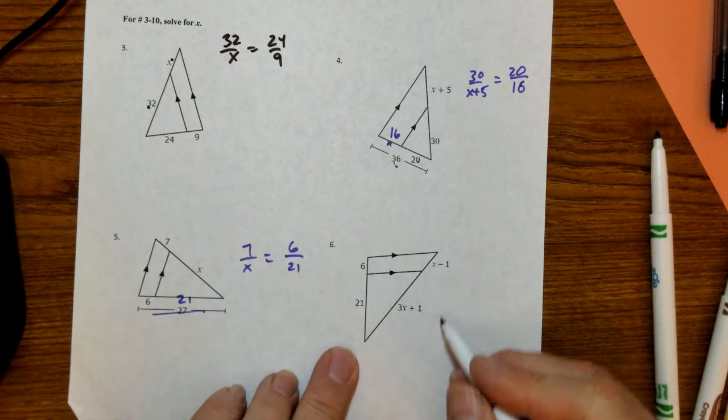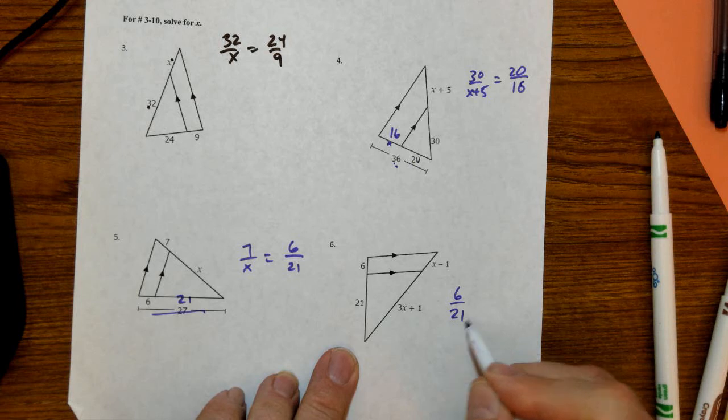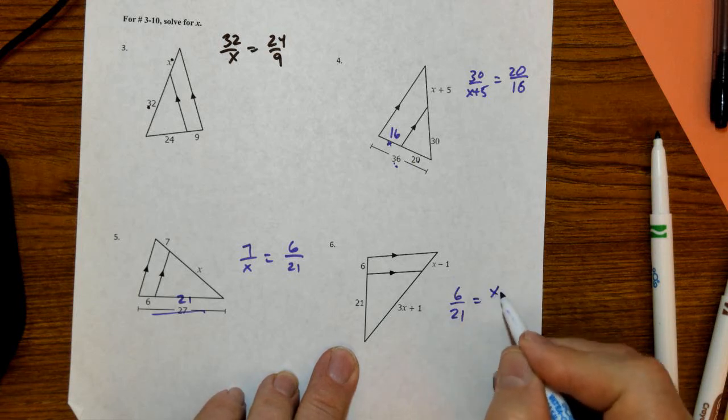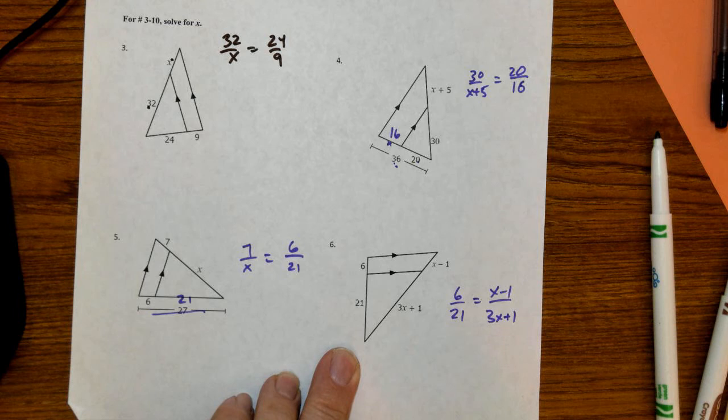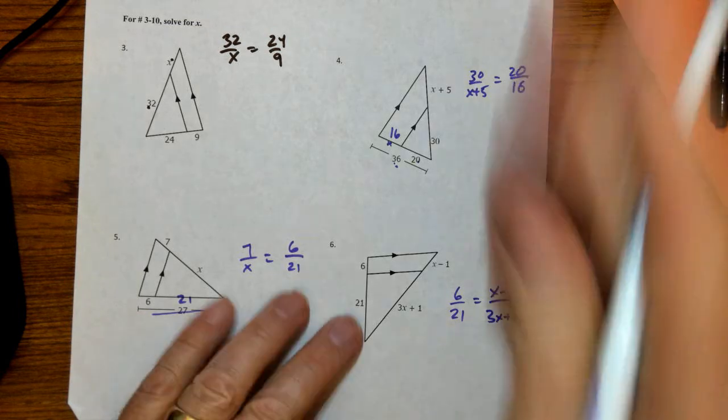This one is going to be 6 is to 21 as X minus 1 is to 3X plus 1. Do your cross product, solve for X.